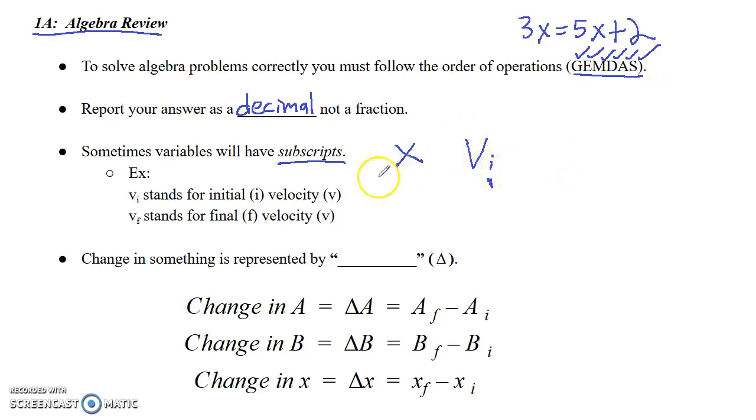or v subscript f. And basically what the subscript does, it just adds more information. So if you see something like vi, the v, just as an example, v would be velocity. The i would stand for initial. So vi would basically stand for initial velocity.